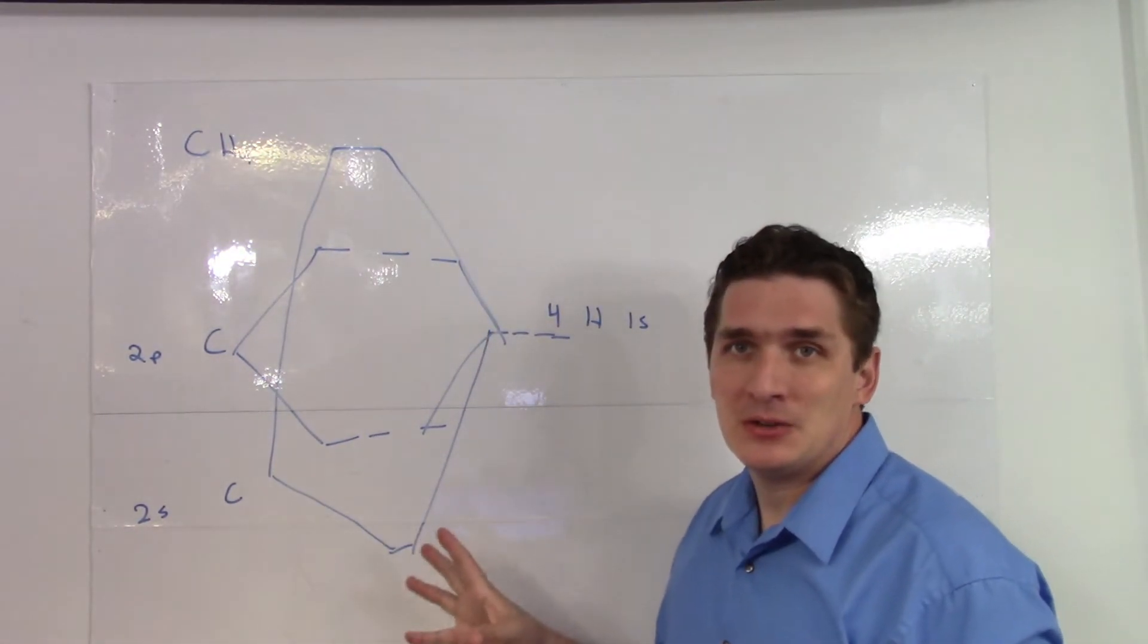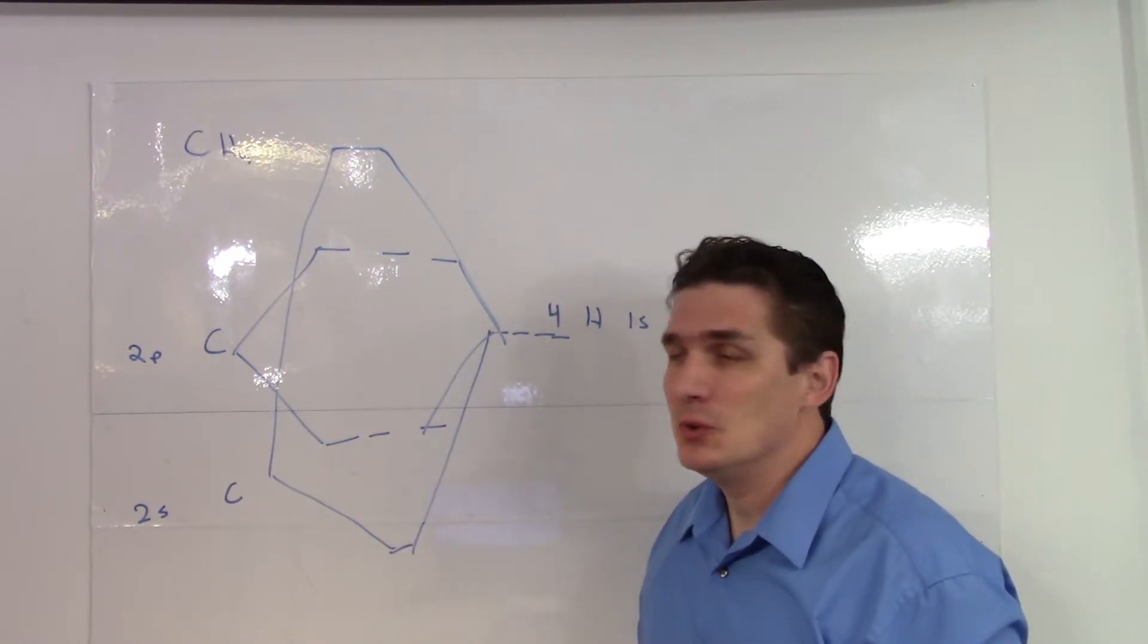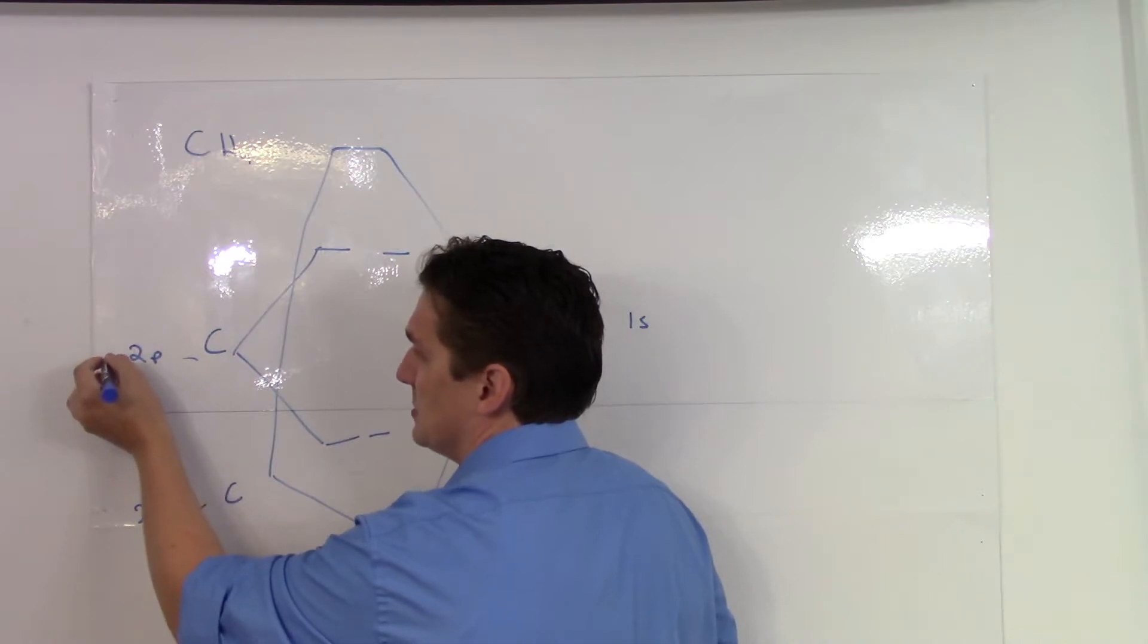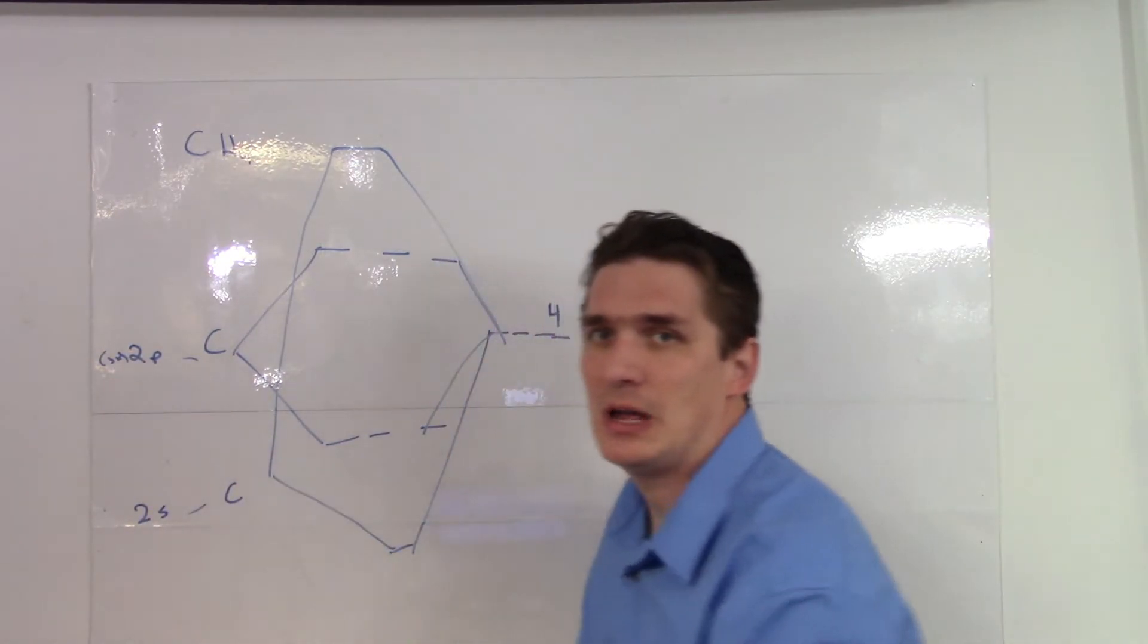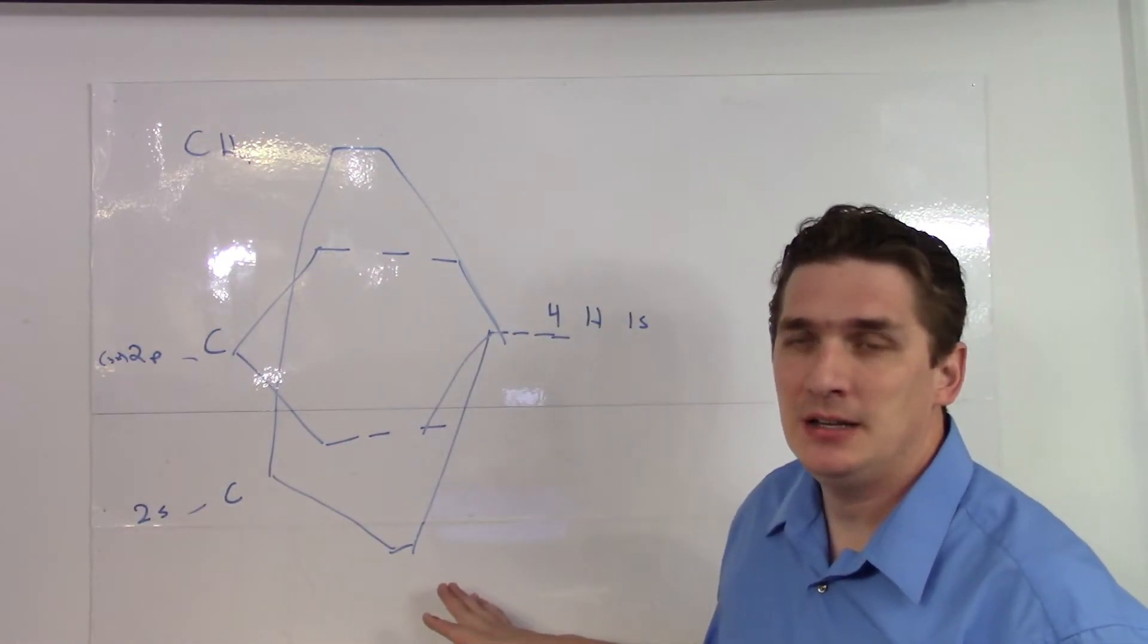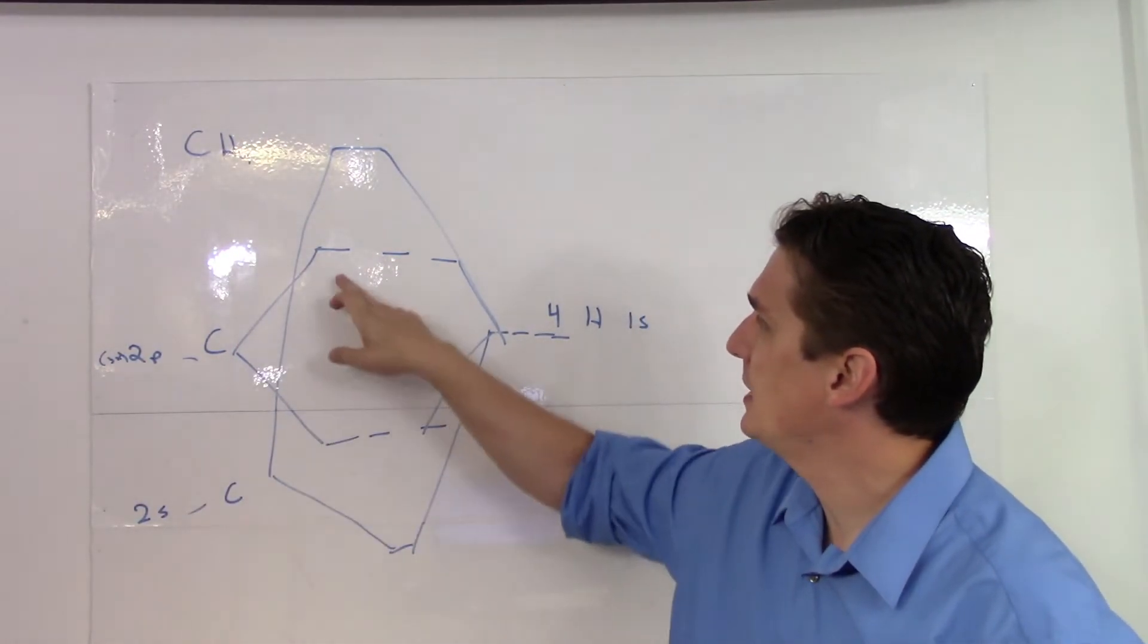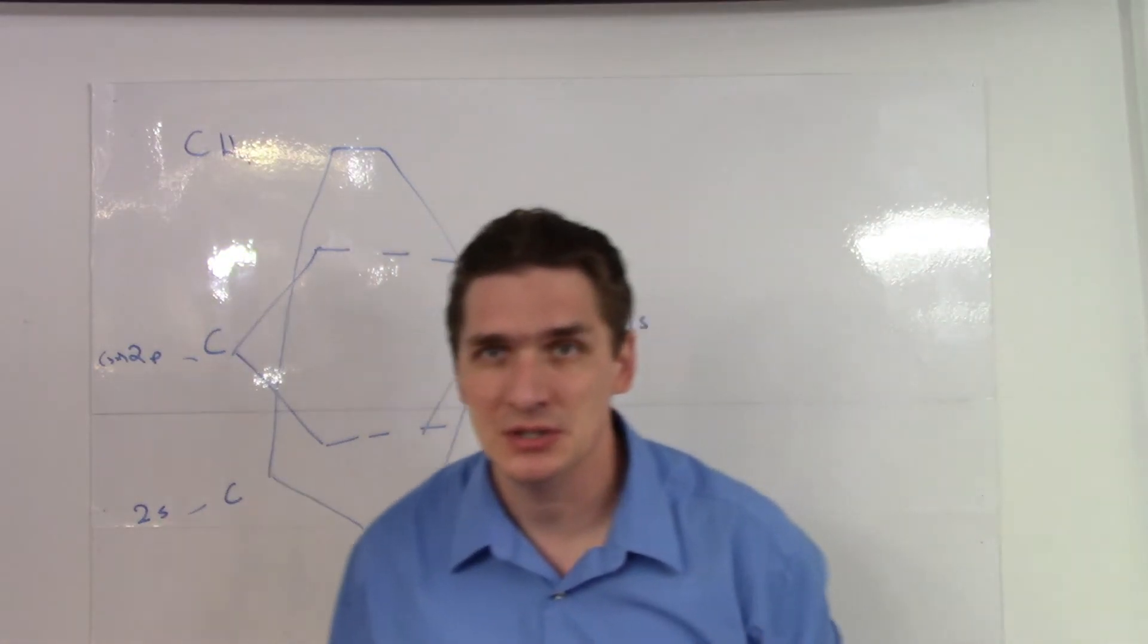So if we look at the molecular orbital structure of CH4, we have a carbon 2S, carbon 2P, and there's three of them. You've got PX, PY, PZ. And we ended up generating eight molecular orbitals that are generated.